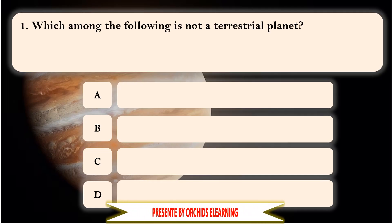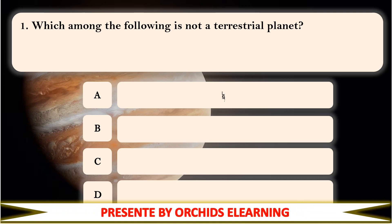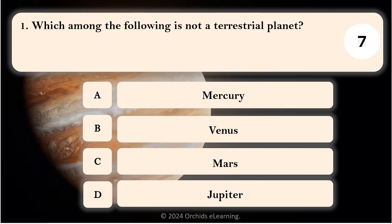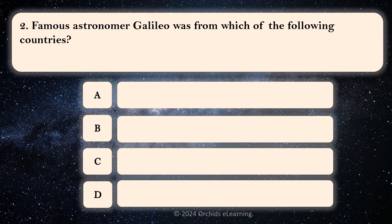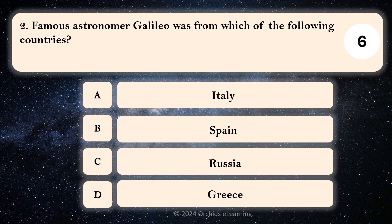Which among the following is not a terrestrial planet? Jupiter. Famous astronomer Galileo was from which of the following countries? Italy.